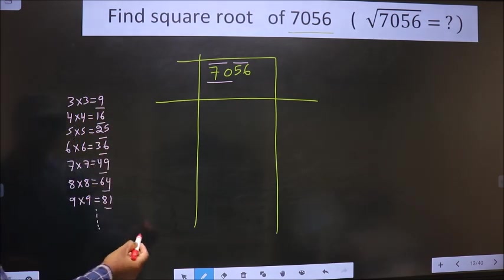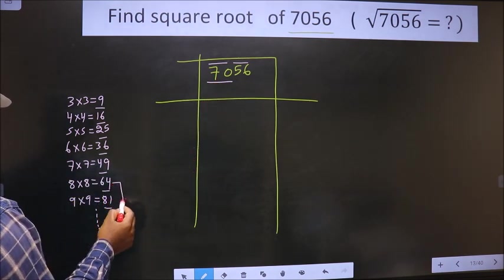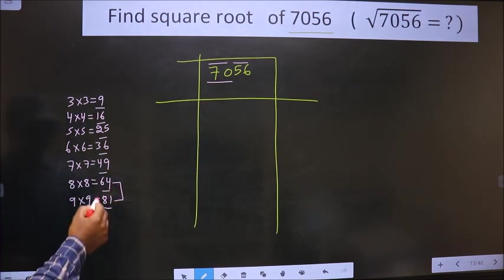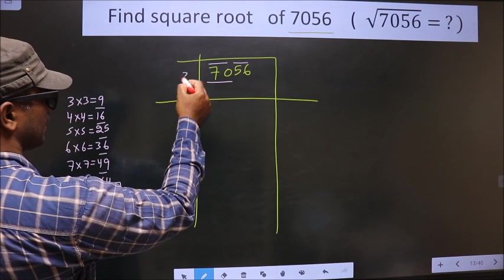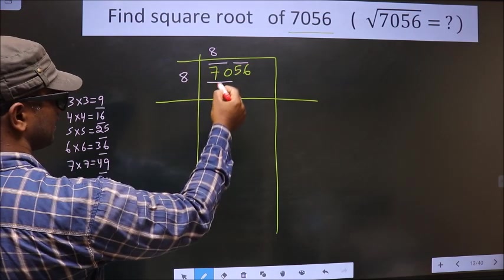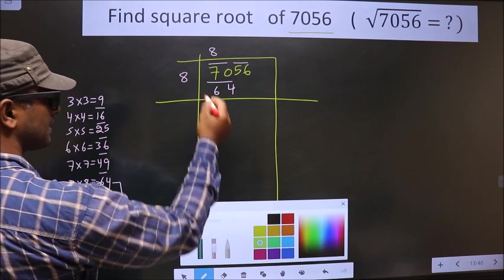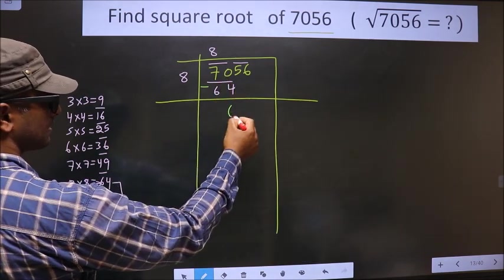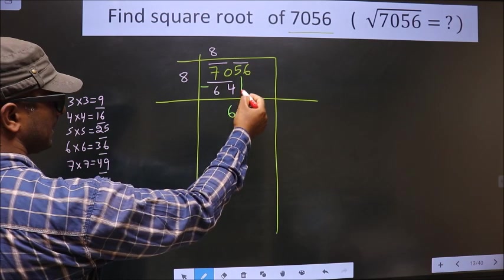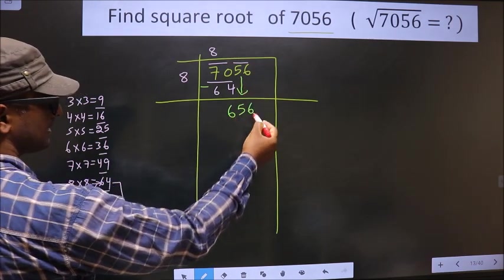Here we have 70. 70 lies between these two numbers, so I take the smaller one that is 64. That is 8 times 8, 64. Now we subtract. 70 minus 64 is 6. Now this pair as it is you take down, making it 656.